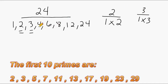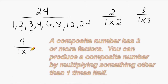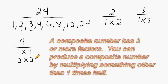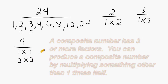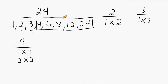Now the number 4 would be considered a composite number. You can do 1 times 4 to produce 4, but you can also multiply 2 times 2 to make 4. And when you can do a combination of things to produce the number, it is a composite number. So all of these other numbers here are composite factors of 24.